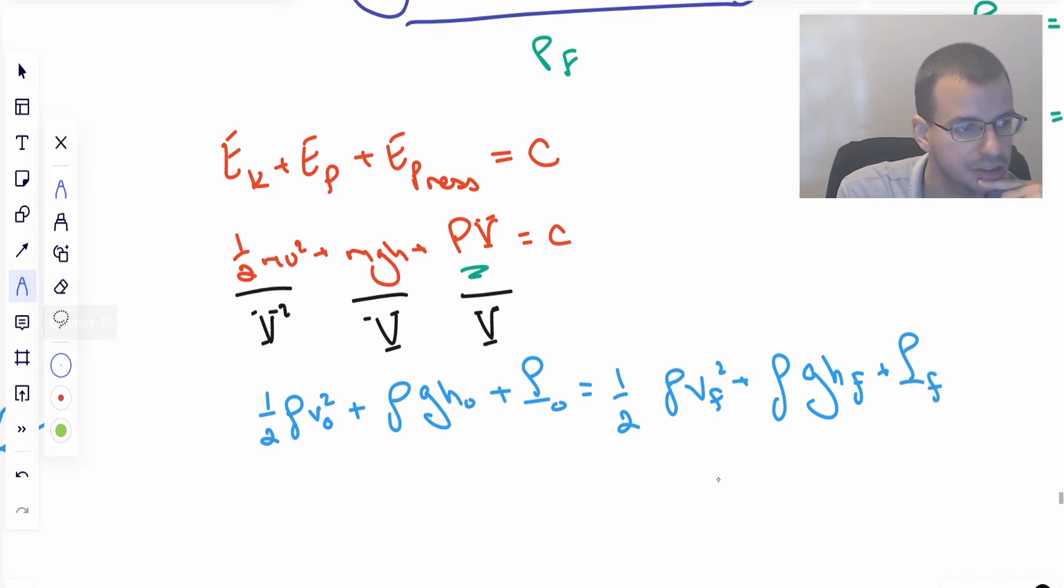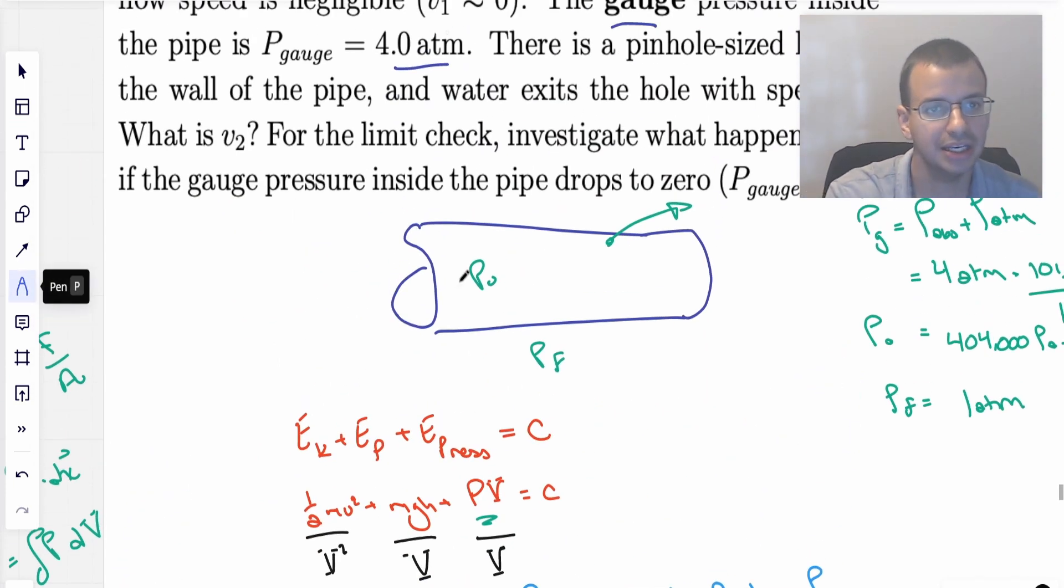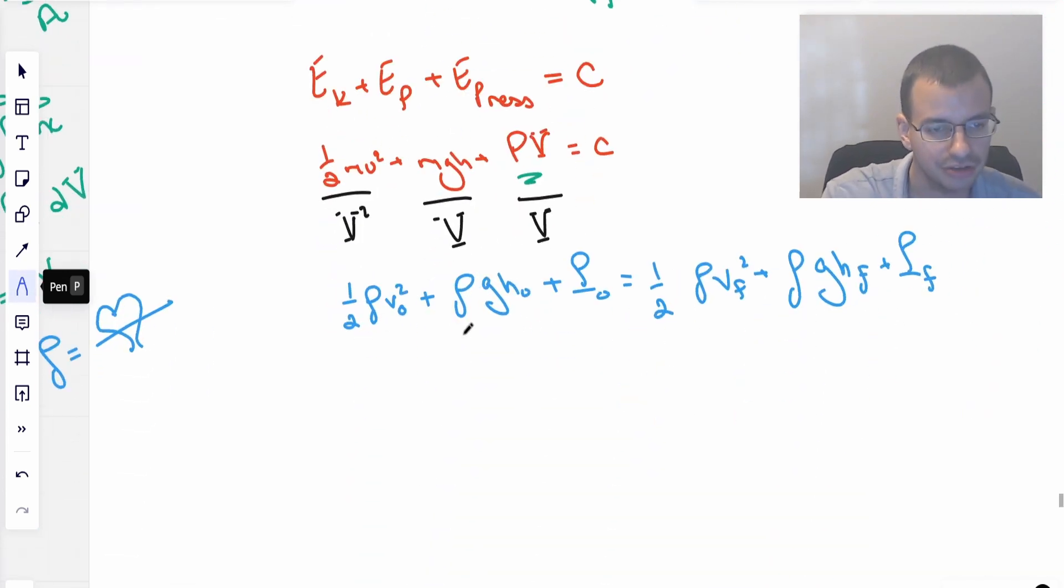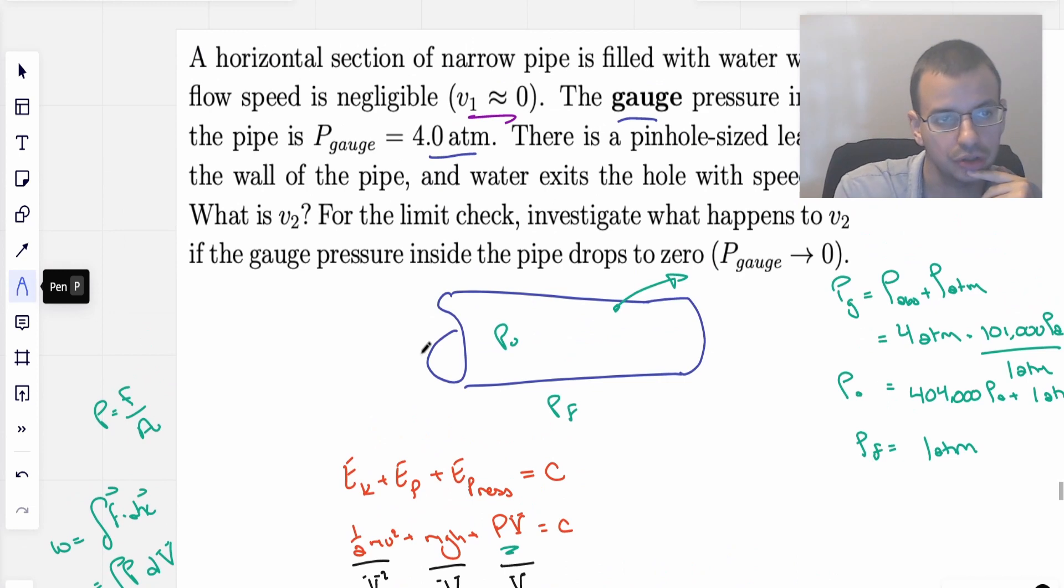So now this is our equation we're going to use. We're going to start canceling things out. We are told that the initial speed is zero, or about zero, negligible. So they use v1, I use v0, same idea, zero.